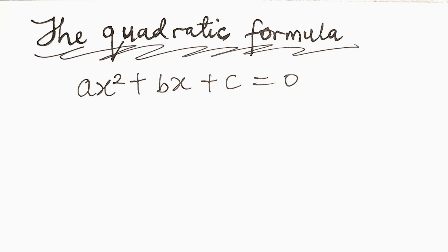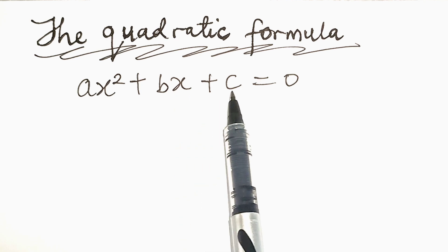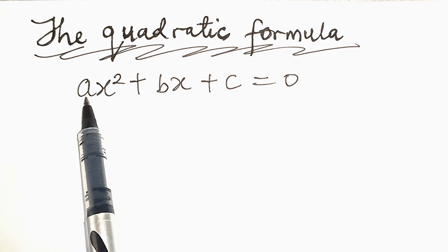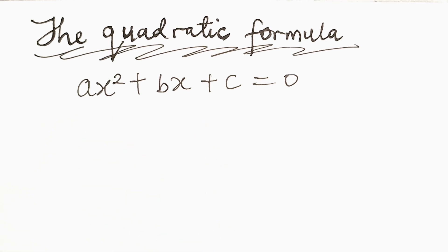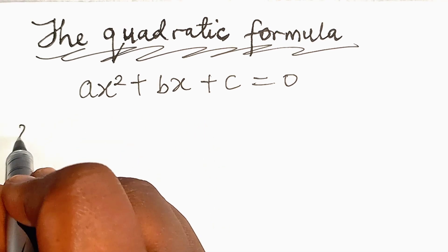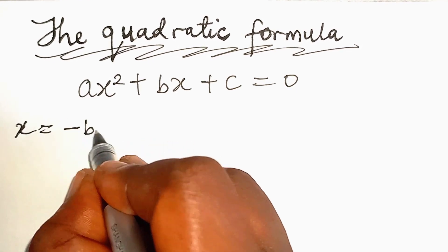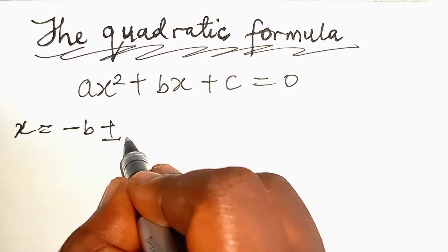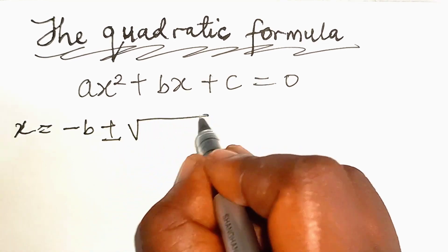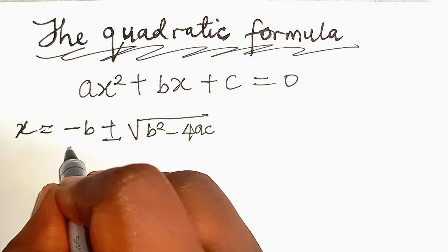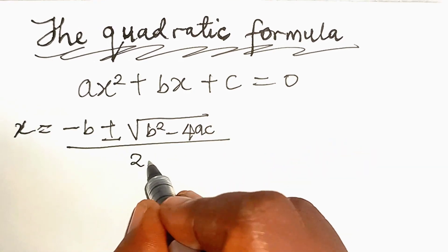If we apply the method of completing the square to the general quadratic equation ax squared plus bx plus c equal to 0, where a is non-zero, we obtain the quadratic formula x equal to minus b plus or minus square root of b squared minus 4ac divided by 2a.